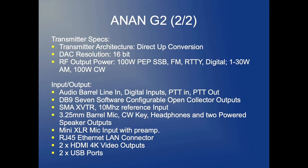On the transmitter side, it's a direct up conversion transceiver, and the DAC resolution is 16 bits — the DAC being the digital to analog converter. RF power is 100 watts PEP for SSB and standard modes including digital, 1 to 30 watts for AM, and 100 watts for CW.